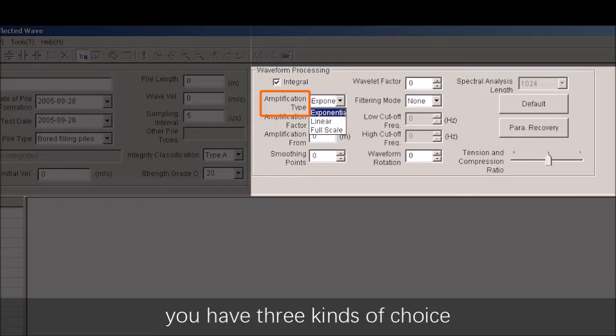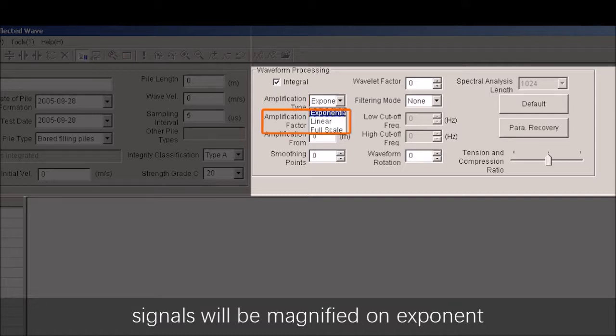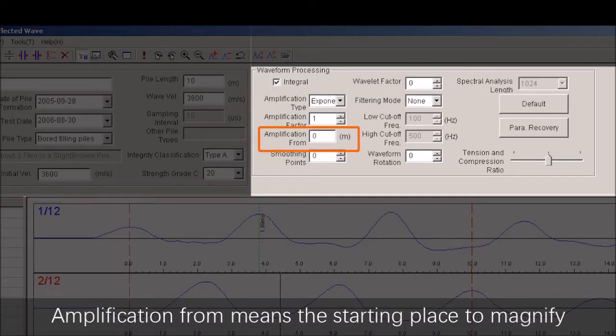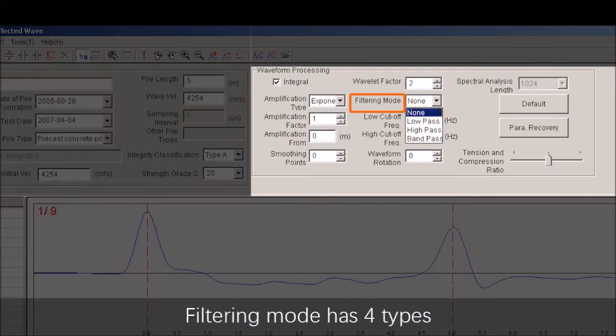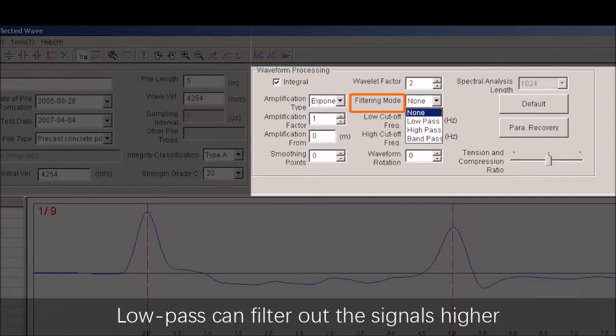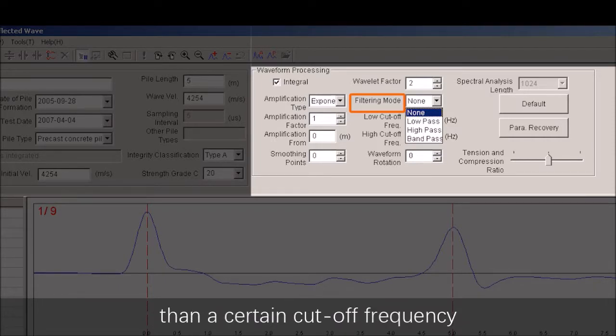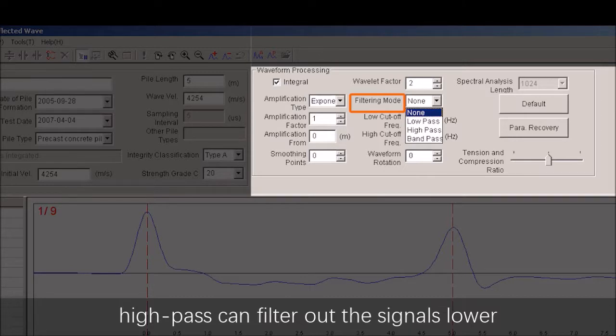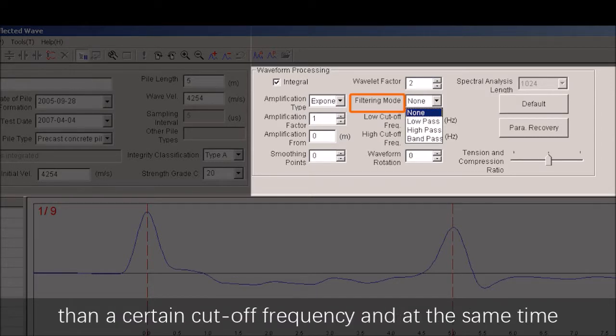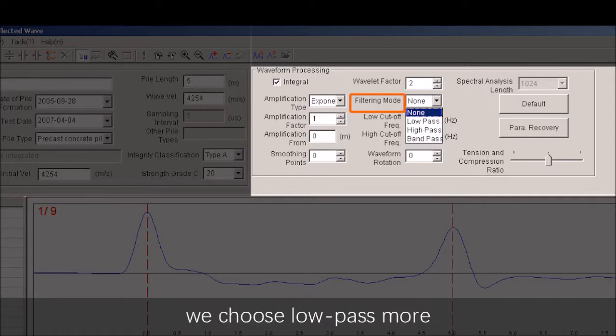Smoothing points refers to how smooth the signal diagram is. The bigger the smoothing points, the smoother the signal diagram is. Smoothing points range between 3 and 512, and generally it is set at 10. Amplification time: You have three kinds of choices - exponent, linear, and full scale. Usually we select exponent. Its characteristic is the signal will be magnified on exponent. For amplification factor, you can choose according to your need. Amplification from means the starting place to magnify. Filtering mode has four types: all-pass, low-pass, high-pass, and band-pass. Usually we choose low-pass mode.